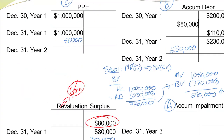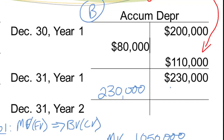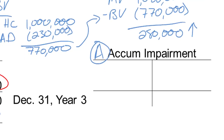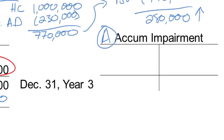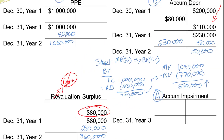Let's finish off these T-accounts. PP&E becomes $1,050,000. Accumulated depreciation gets a $150,000 credit in that last entry, so that becomes the balance. Accumulated impairment still has nothing. We end up with $360,000 in revaluation surplus. That's the end of year two.